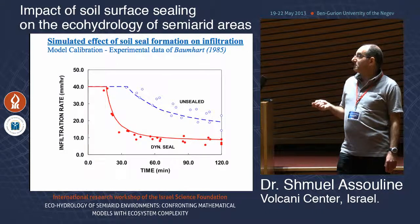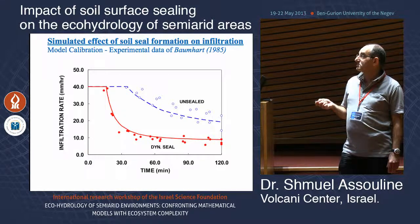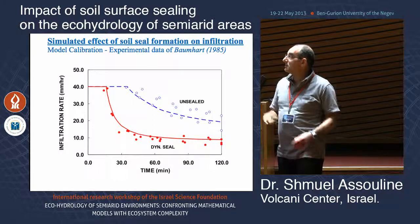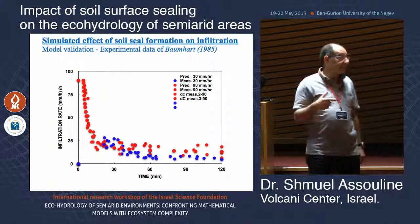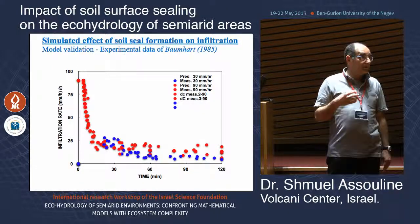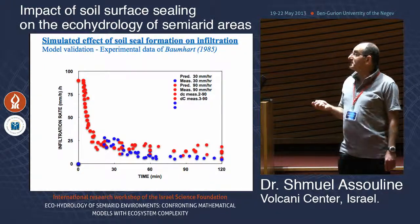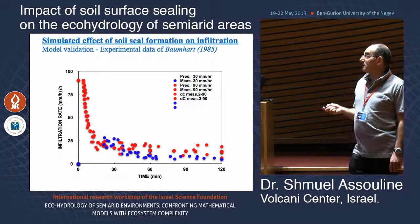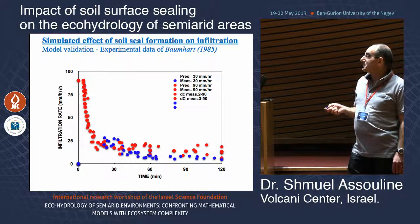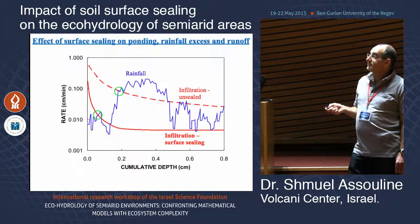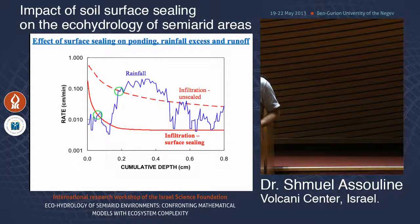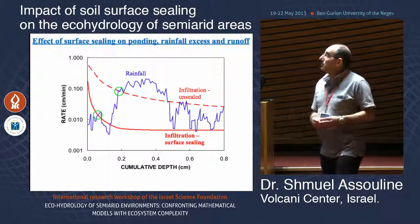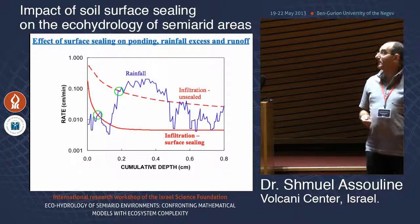We can validate the model against data from different rainfall events using different rainfall intensities and kinetic energies. The model predicts quite well the change in infiltration rate with time for different rainfall intensities, and is even able to predict that for higher rainfall intensity we get a more permeable seal layer — a result that was somewhat counterintuitive.